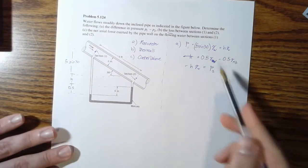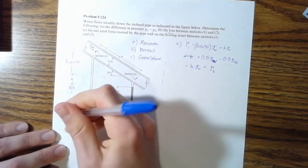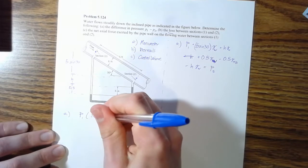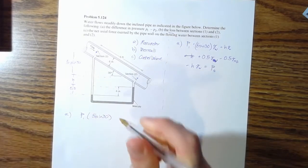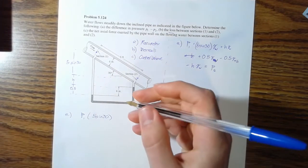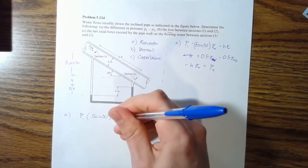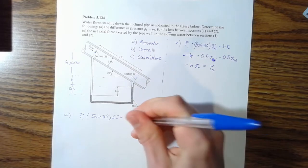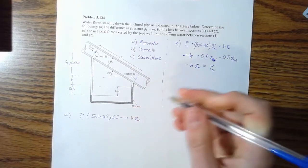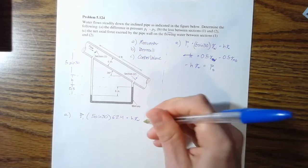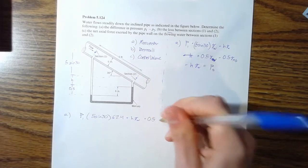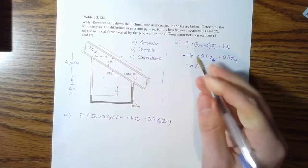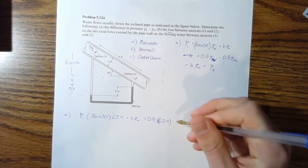So, this is a little messy, so I'm going to rewrite it down here real quick. So P one times five sine 30, and I'll plug numbers in as I go, times 62.4 plus H times gamma water, plus 0.5 gamma water, which is 62.4. I didn't plug it in over here because it's going to cancel out with this term that we have here. So 0.5.